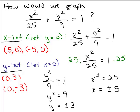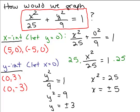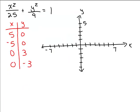So for the equation x squared over 25 plus y squared over 9 equals 1, we found four ordered pairs — the x and y intercepts: (5, 0), (-5, 0), (0, 3), and (0, -3). Let's graph those four ordered pairs. That's four points, but it doesn't tell us exactly what the curve looks like — you could plug in other values for x and y to get more points.